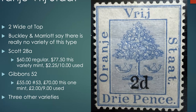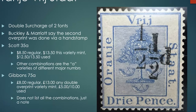This is supposedly the 'wide two' variety — the top of the '2' is supposed to be wider than most stamps on the sheet. However, Buckley and Marriott, who have hundreds of examples, say if you measure carefully there's really no difference between the various widths of the top of the '2,' and they say it really isn't a variety. But Scott and Gibbons both list it, and there are three other varieties of this particular stamp.